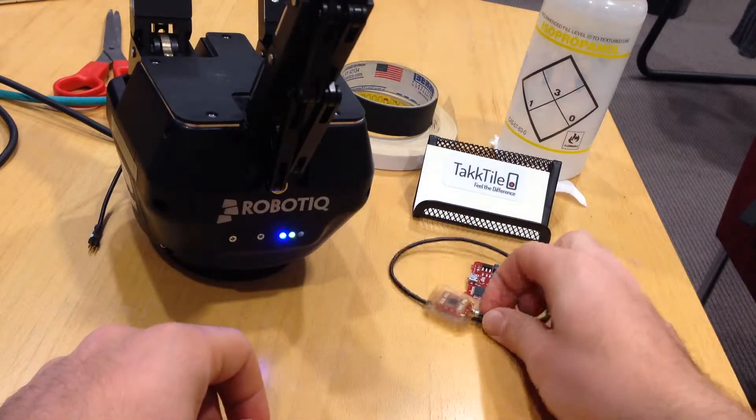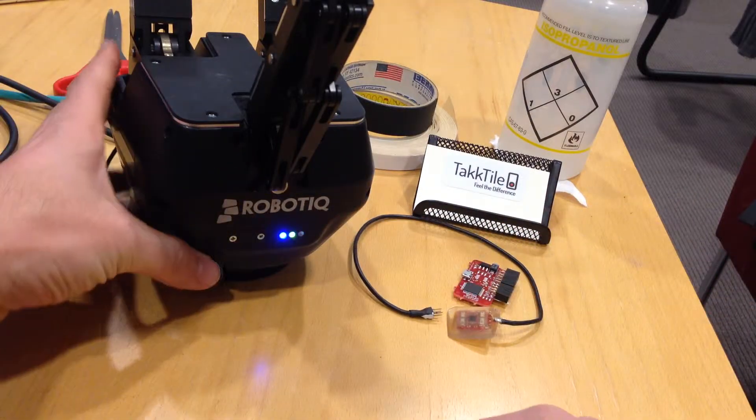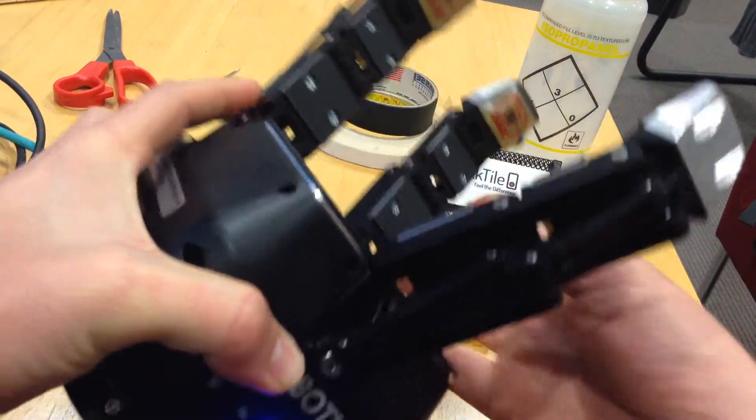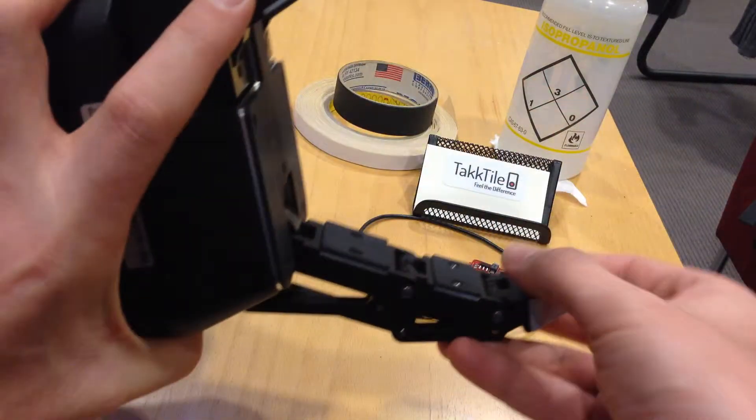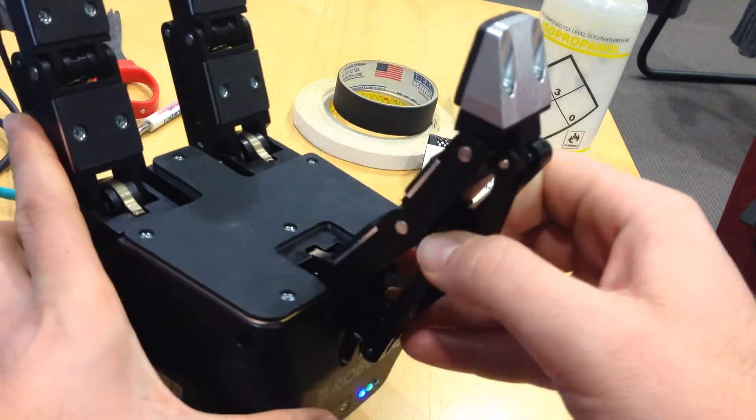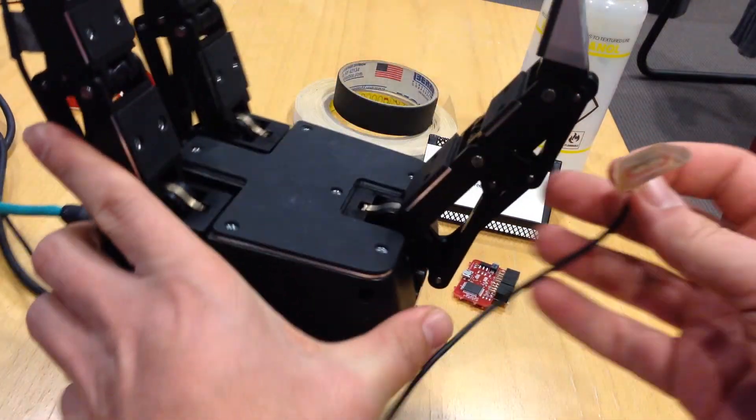What we're going to do is install tactile sensors on a robotic gripper. This is a robotic adaptive gripper with three fingers. You can see two sensors are already attached and another one will be attached here on this surface. The sensor is going to sit exactly here like this.